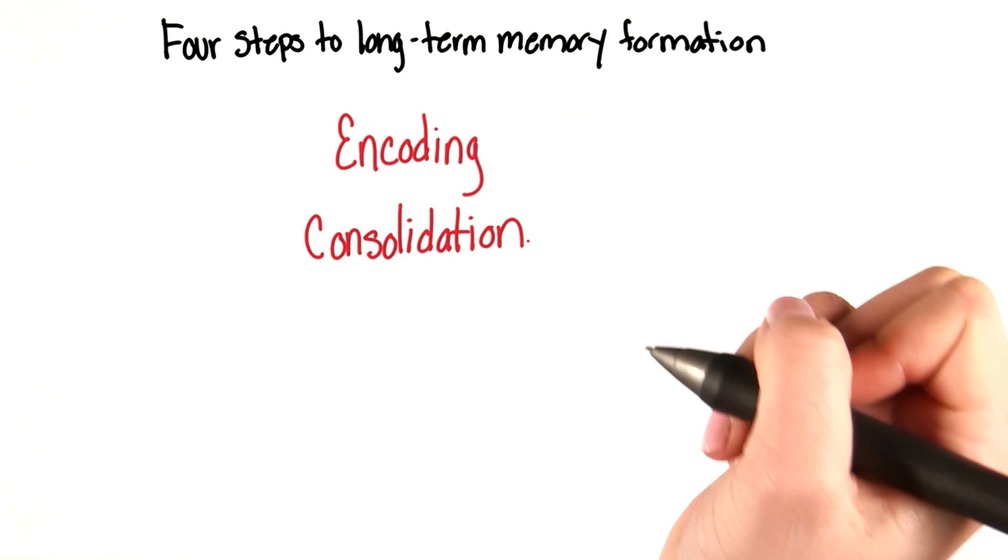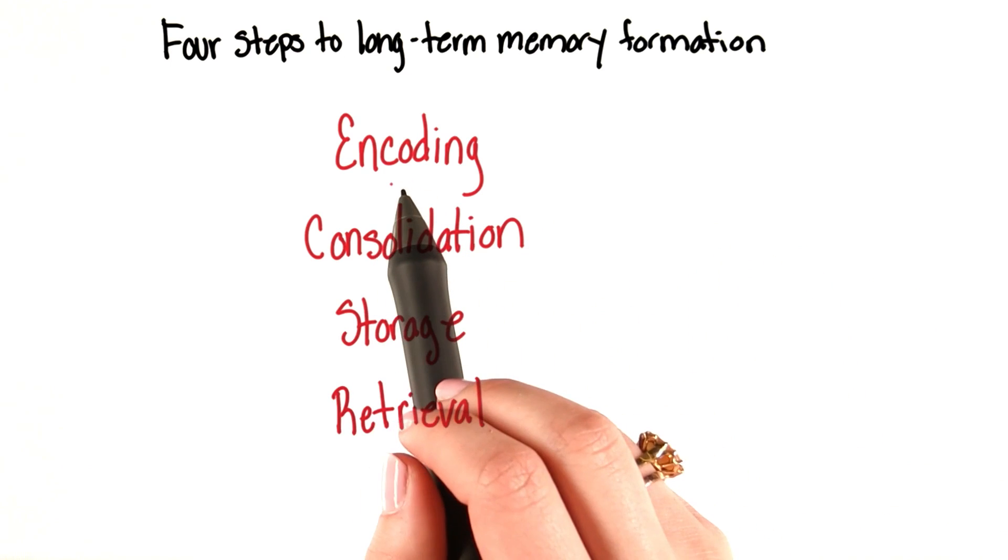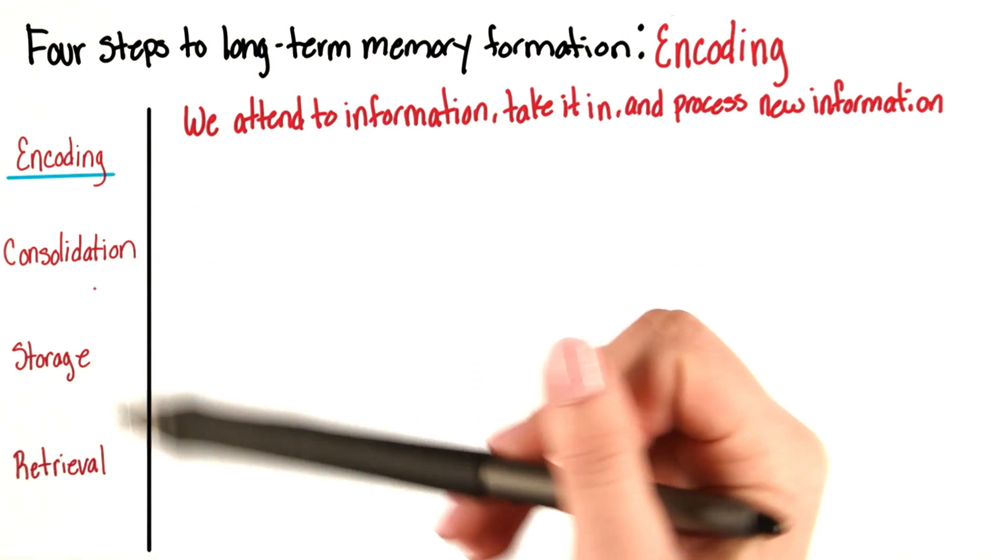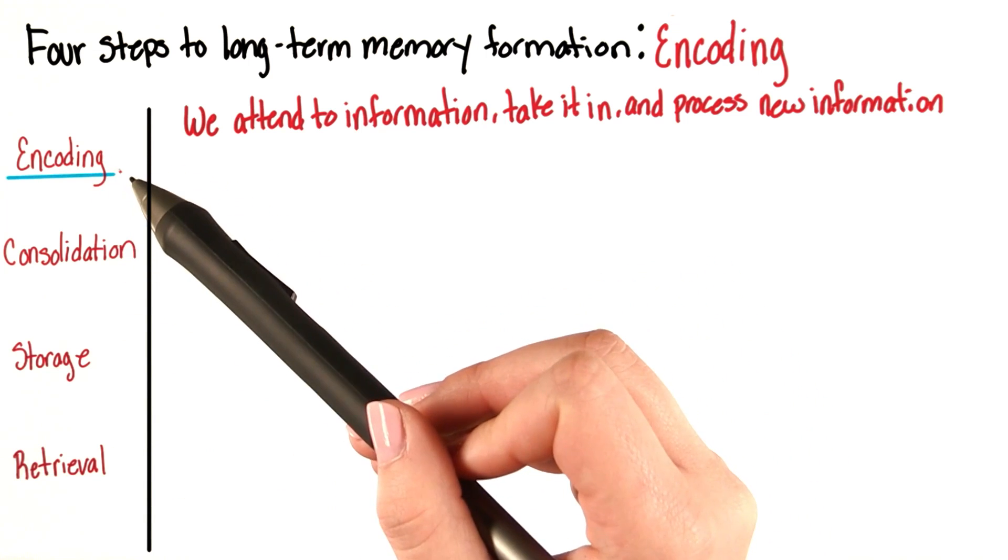There's encoding, consolidation, storage, and retrieval. Let's first start by looking at encoding. The first of the four steps of turning information into long-term memory, as we said, is encoding.